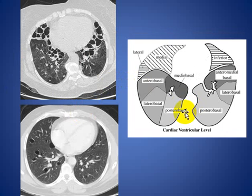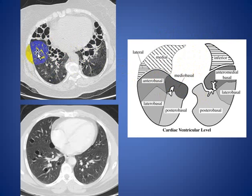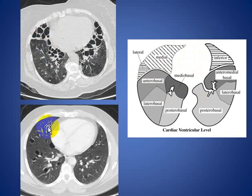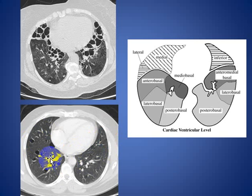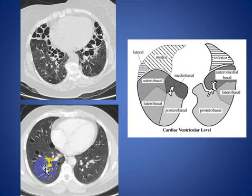At the fifth and last level, at the level of the ventricles of the heart, you can see the fissure region and identify the medial segment and lateral segment of the middle lobe. On the left side there is also a fissure. The inferior segment is divided into three parts: the upper third is the anterior segment, the middle third is the lateral segment, and the lower third is the posterior segment of the right lower lobe.